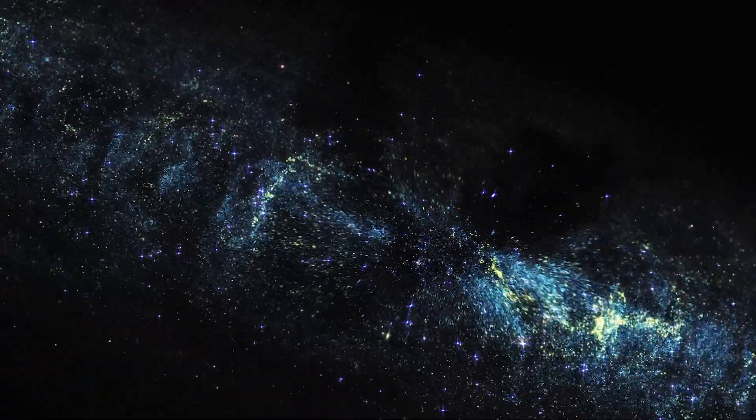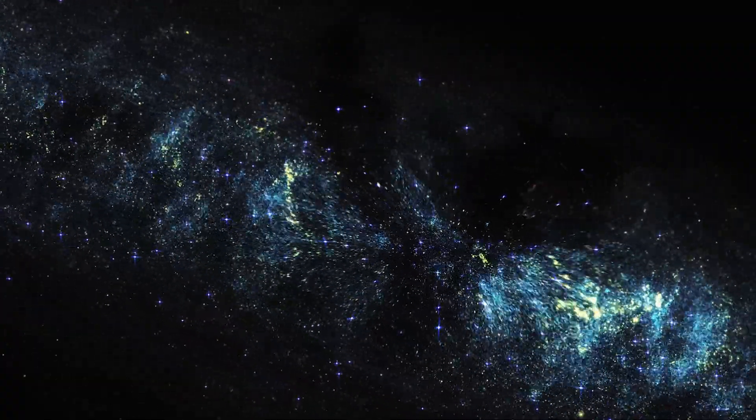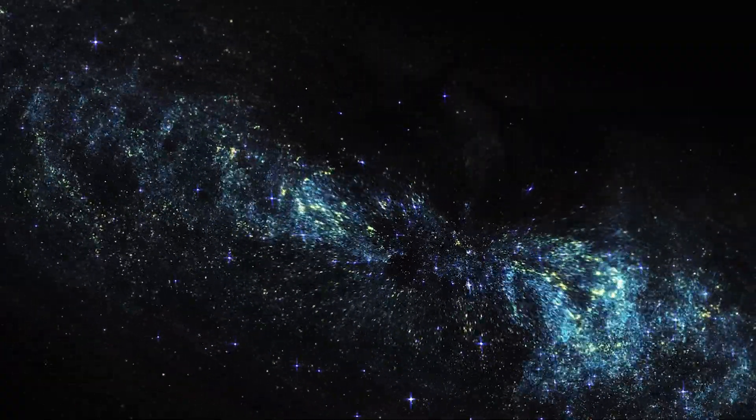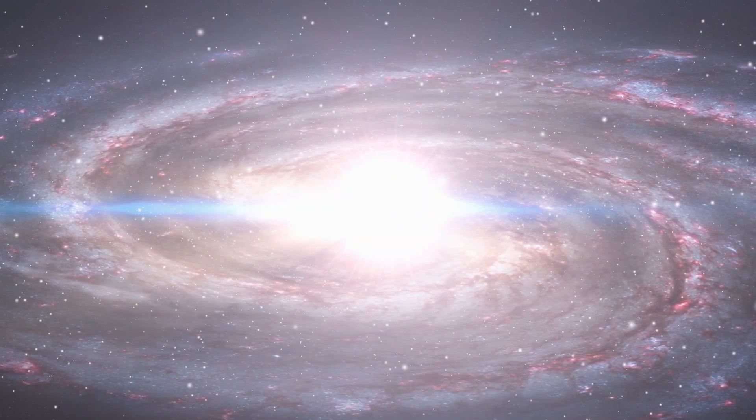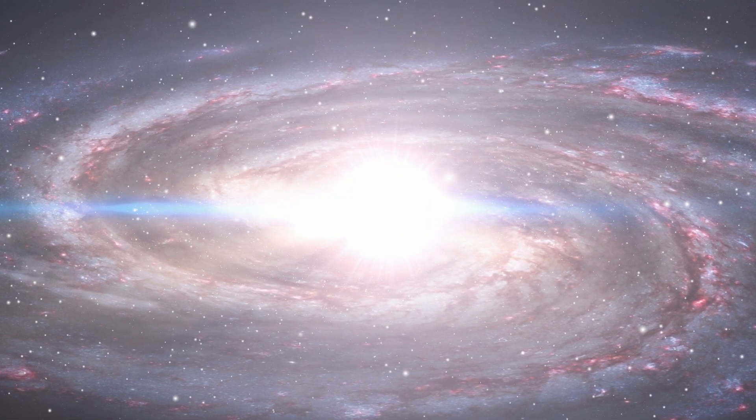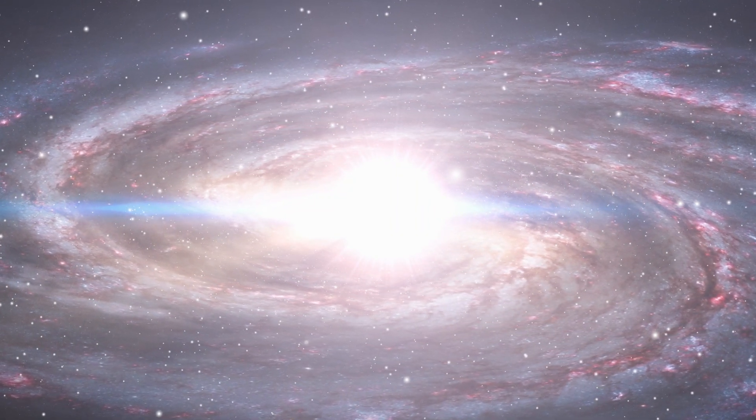Over eons, through countless mergers and the gathering of interstellar gas, galaxies evolved into the diverse shapes we observe today: spirals like our Milky Way, elliptical galaxies, and the peculiar irregular galaxies.